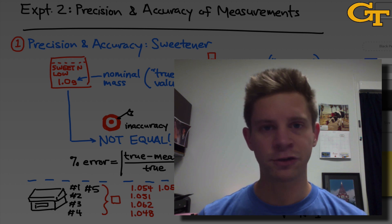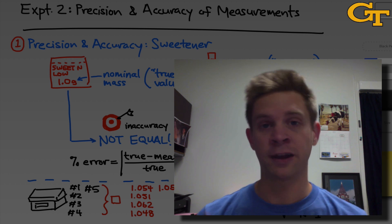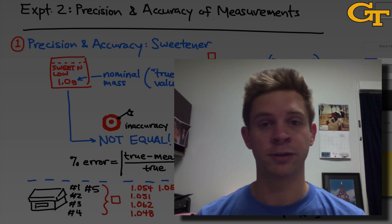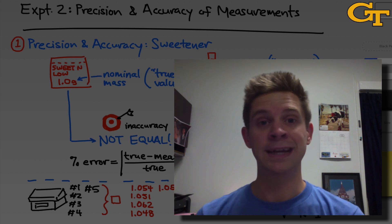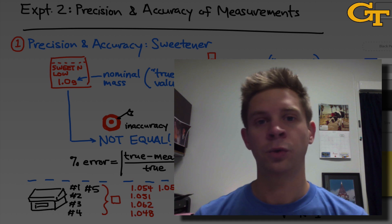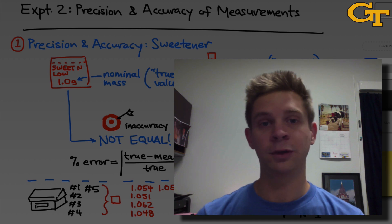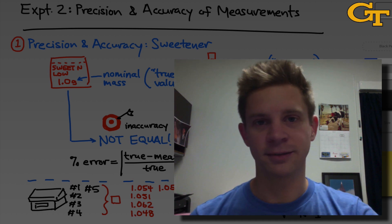There's a deep connection between random errors and the precision in a set of measurements, and systematic errors and the mean and percent error within a set of measurements. We'll deal with those in this experiment.